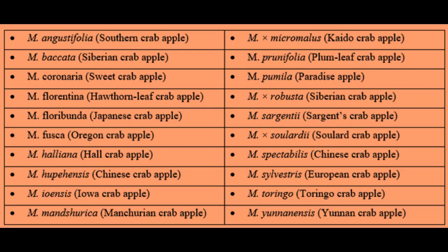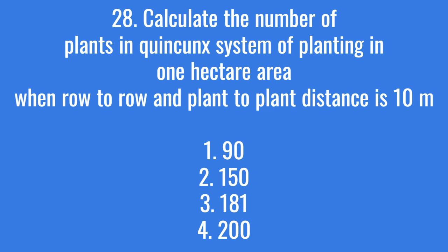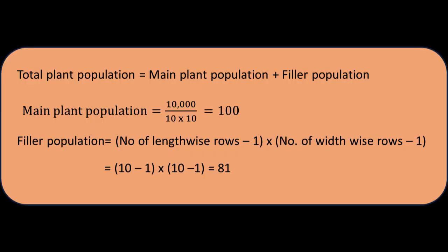Siberian crabapple (M. baccata) is a deciduous tree with a rounded canopy of spreading branches, ultimately reaching 20 to 50 feet in height. Calculate the number of plants in the quincunx system of planting in one hectare when row-to-row and plant-to-plant distance is 10 meters. The right answer is option 3. Total plant population is the sum of main plant population and filler plant population.